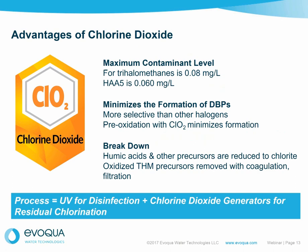THMs have an MCL — maximum contaminant level — of 0.08 mg/L, while the five haloacetic acids have an MCL of 0.06 mg/L. The use of chlorine dioxide is far more selective than the other halogens. When you pre-oxidize with chlorine dioxide, the formation of these precursors is minimized or eliminated altogether. Humic acids and other precursors are reduced to chloride, which can then be removed with coagulation and filtration. The process does not form disinfection byproducts the way regular chlorine might, making it very important in mitigating their formation.